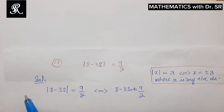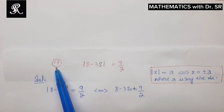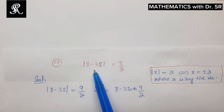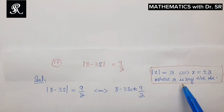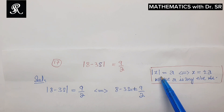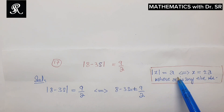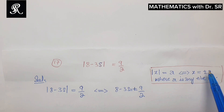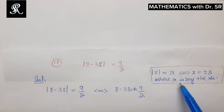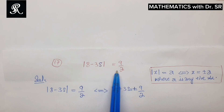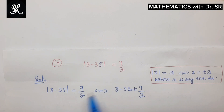Assalamu alaikum. In this video I'll solve a problem for absolute value equations. We will use this property: the absolute value of x is equal to a if and only if x is equal to plus or minus a, where a is any positive number. We will use this property in order to solve this absolute equation.